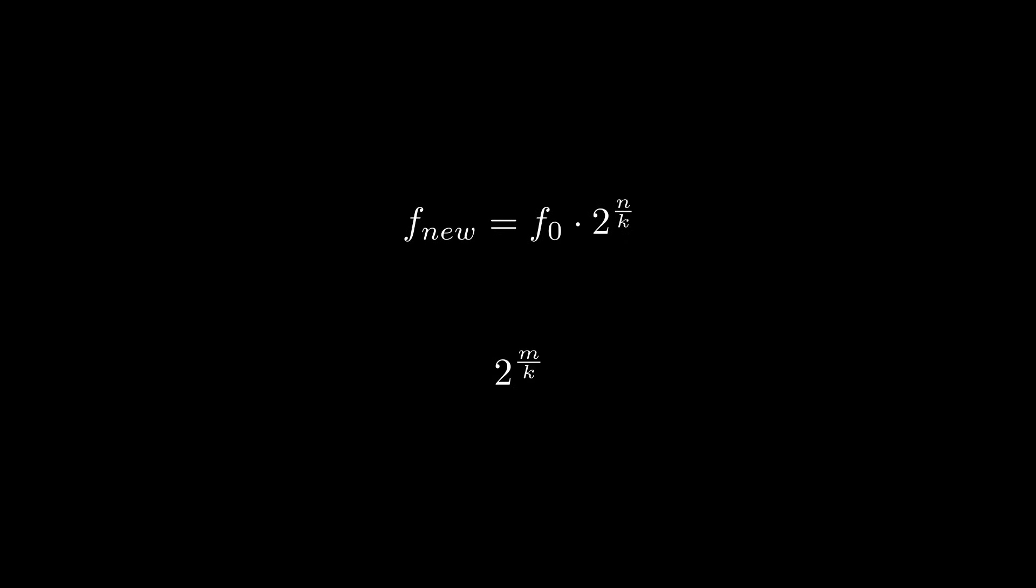Also, this k gives us the number of notes in each octave. Since m tells us how many notes above our initial key we are, this means m equals 0 for our starting key. Now 2 to the power of 0 equals 1, and if our m is equal to k, we get k divided by k, that's 1, and 2 to the power of 1 is 2. So whatever note we start on, we will always find the octave at k number of keys. Perfect.